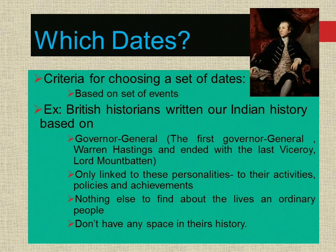Which dates? The criteria for choosing a set of dates was based on a set of events. For example, British historians wrote Indian history based on their Governor Generals — the first was Warren Hastings and it ended with the last Viceroy, Lord Mountbatten. History was only linked to these personalities and their activities, policies and achievements. Nothing about the lives of ordinary people — they don't have enough space in that history.